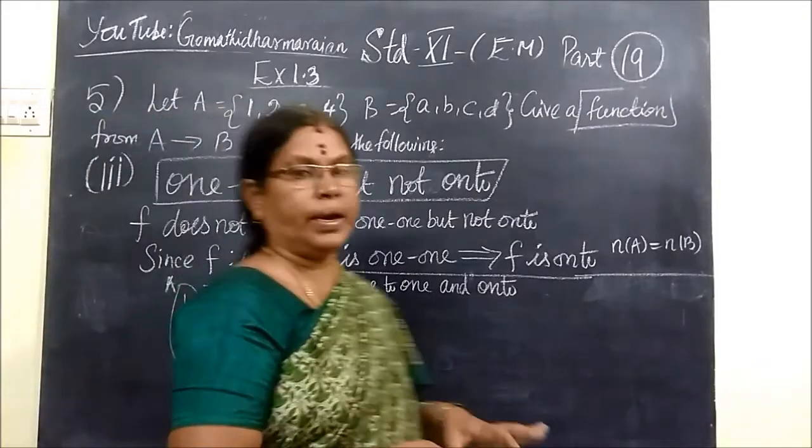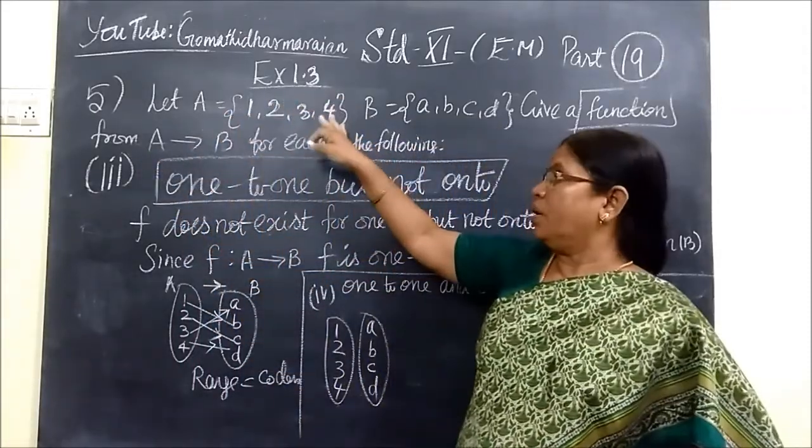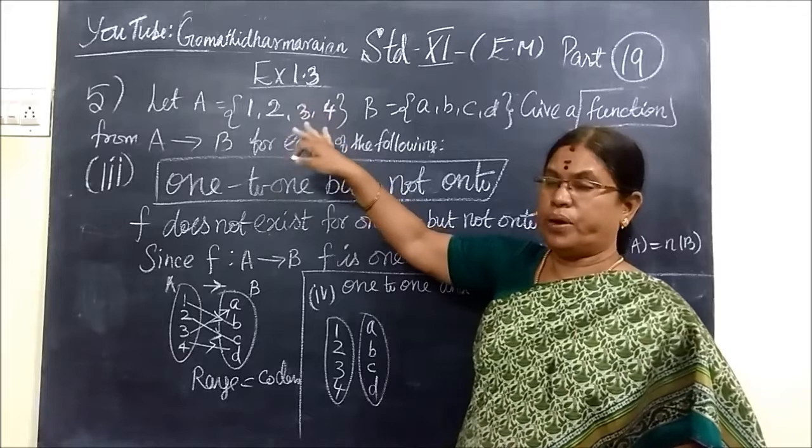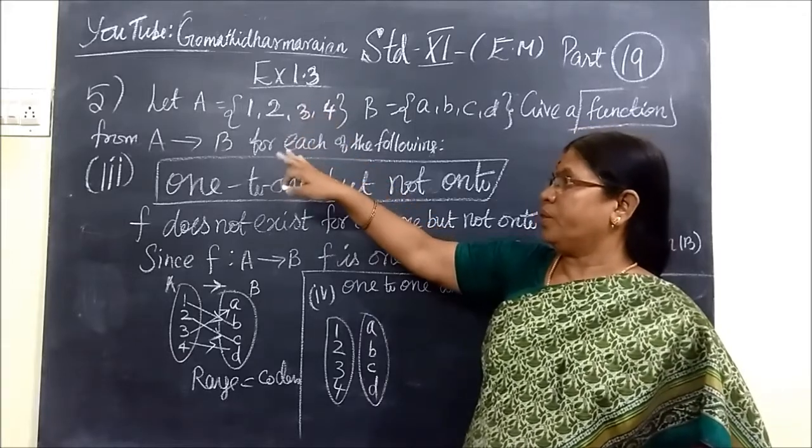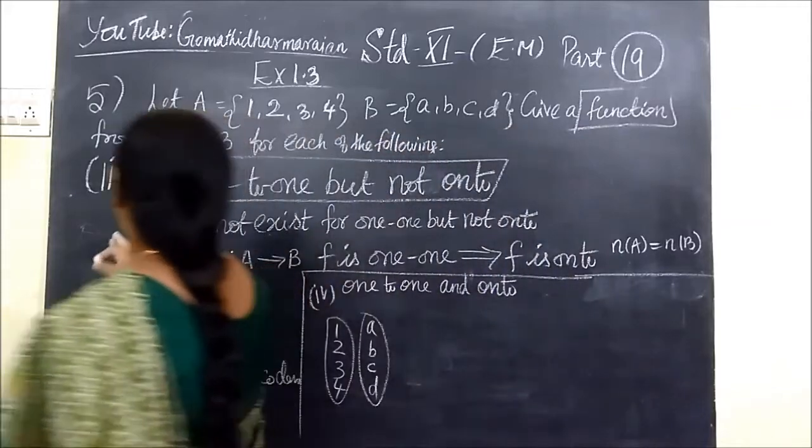So now we see part 19, question number 5, and this is for long standard exercise 1.3. Exercise 1.3 subdivision 1 we have already seen. Now we see the children.